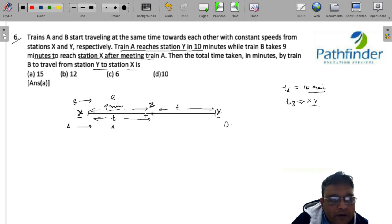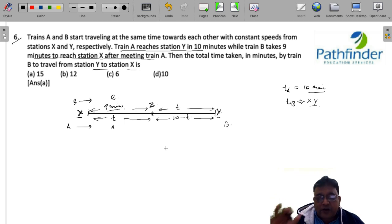A travelled from X to Z in T minutes. B travelled from Y to Z in T minutes. Obviously, since A takes 10 minutes for XY, the time taken by A to travel from Z to Y would be 10 minus T. Now, for the same distance, the ratio of their times must remain the same because their speeds are constant.